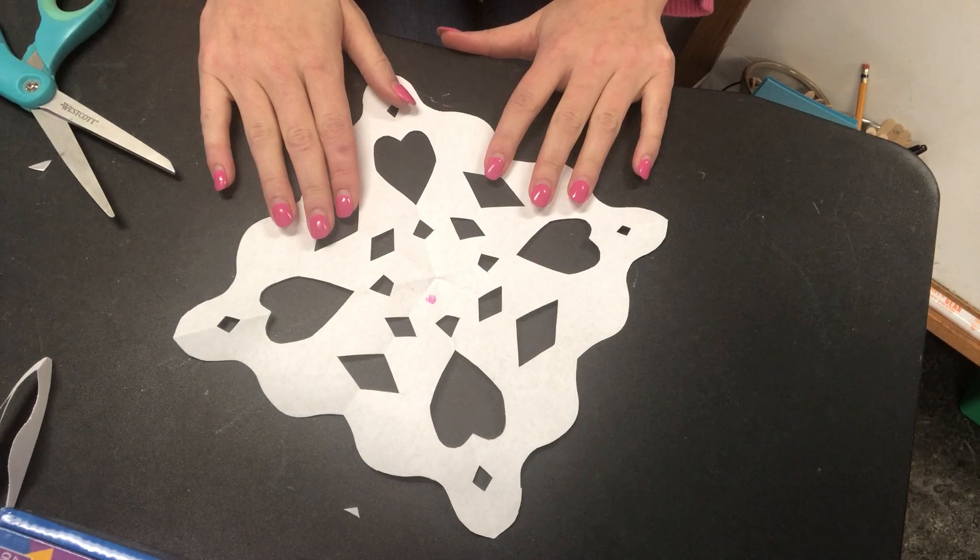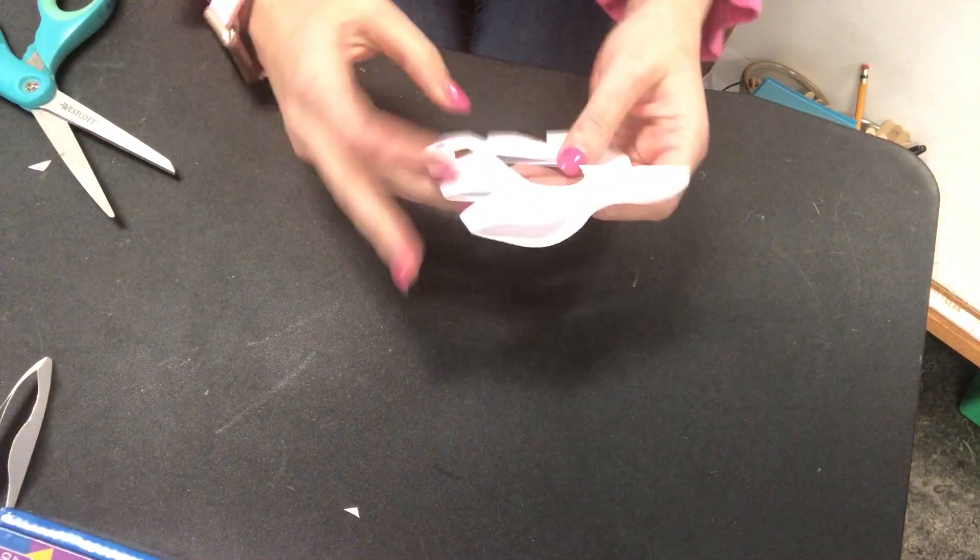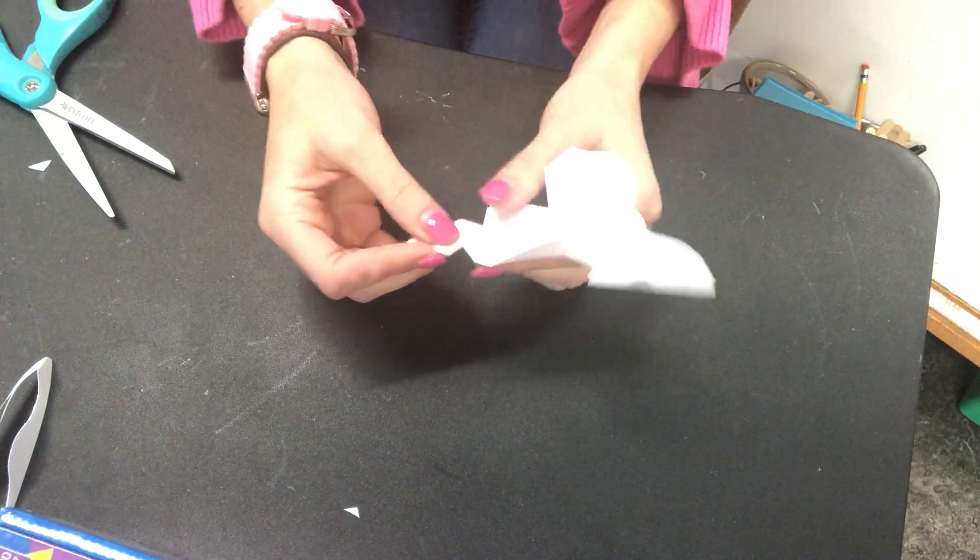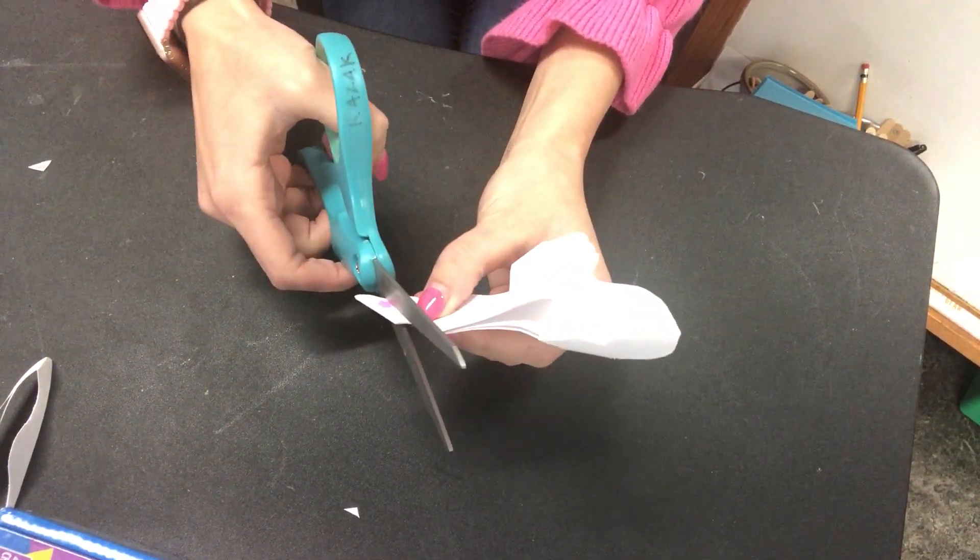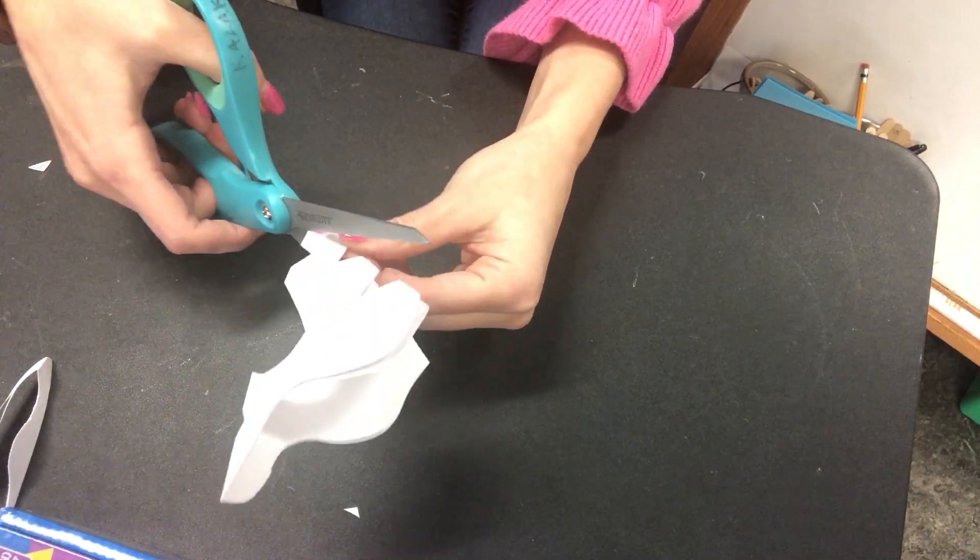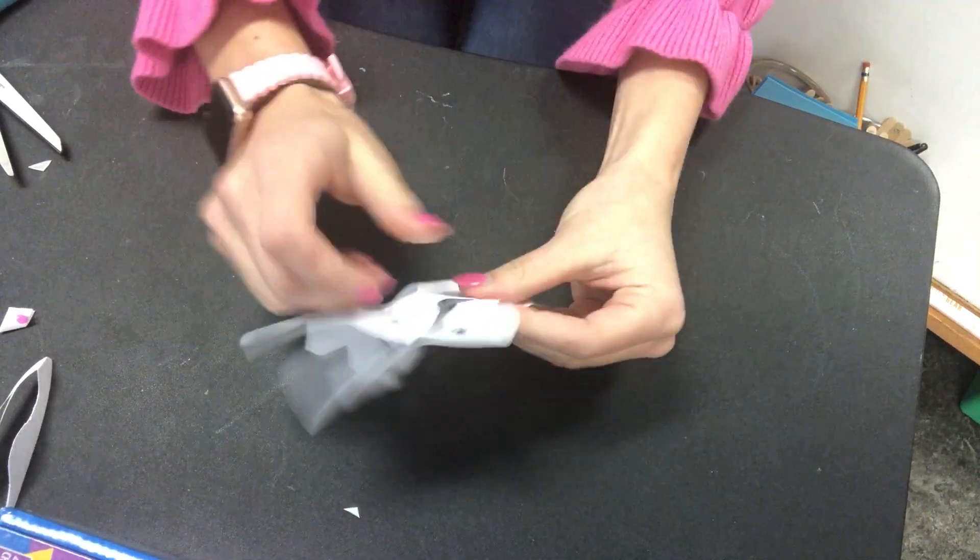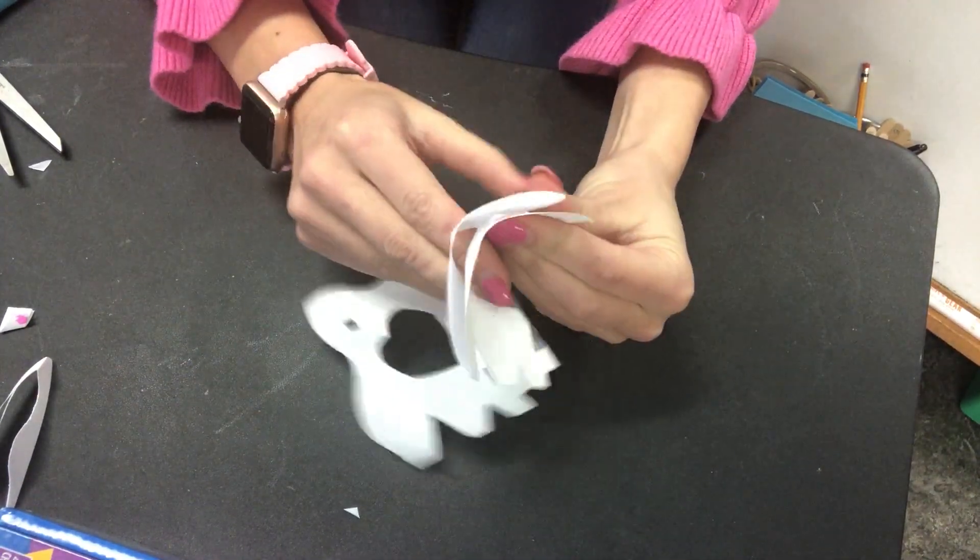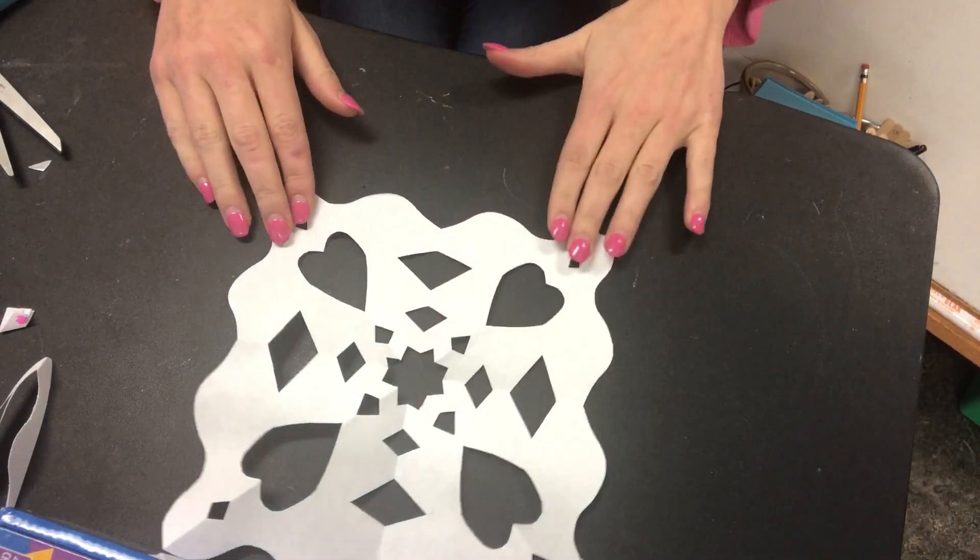Now as you get better and better, you can cut the middle. Let me show you what that would look like. And that's going to be the center of your snowflake. Maybe I just cut up. But to start, it's nice to not cut that part. If you get better and you want to though, it'll look a little bit like this. Now it made a star in the middle.